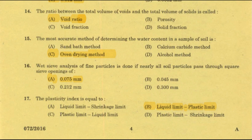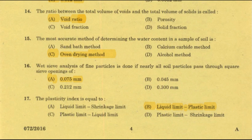Void ratio of fine-grained soil is always greater than void ratio of coarse-grained soil. Next term: porosity, denoted by n. Porosity n equals volume of voids divided by total volume. The porosity value ranges from 0 to 100. Relation: void ratio e equals n divided by 1 minus n. Porosity n equals e divided by 1 plus e.